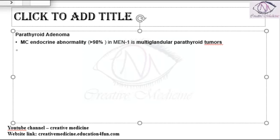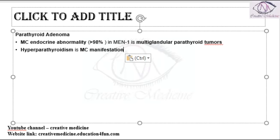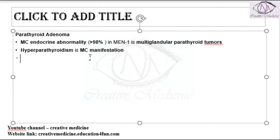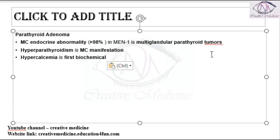The most common manifestation in parathyroid adenoma is hyperparathyroidism. Because of increased parathyroid hormone, there is increased calcium uptake, leading to hypercalcemia in these patients. So: most common endocrine abnormality is multi-glandular parathyroid tumor; most common manifestation is hyperparathyroidism; first biochemical abnormality is hypercalcemia.